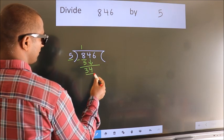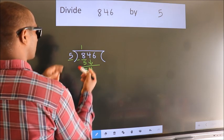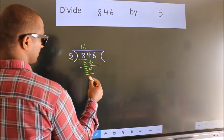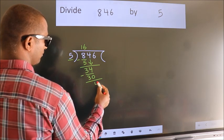A number close to 34 in the 5 table is 5 6s, 30. Now we subtract, we get 4.